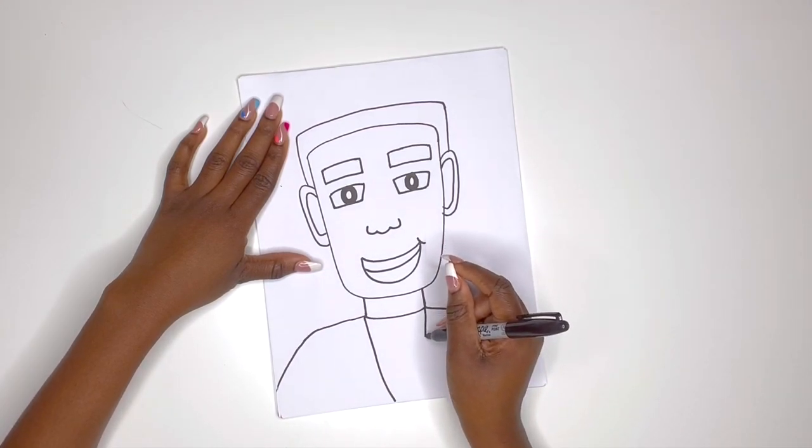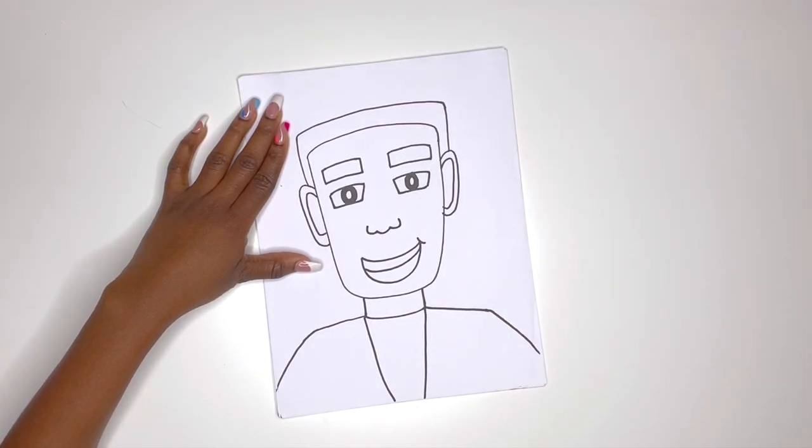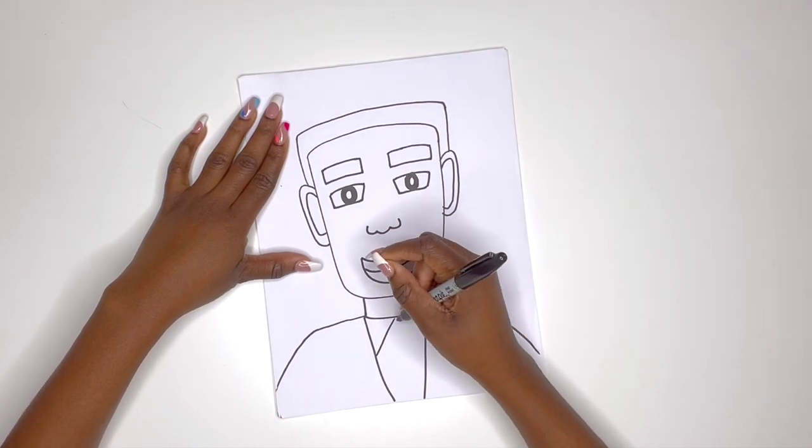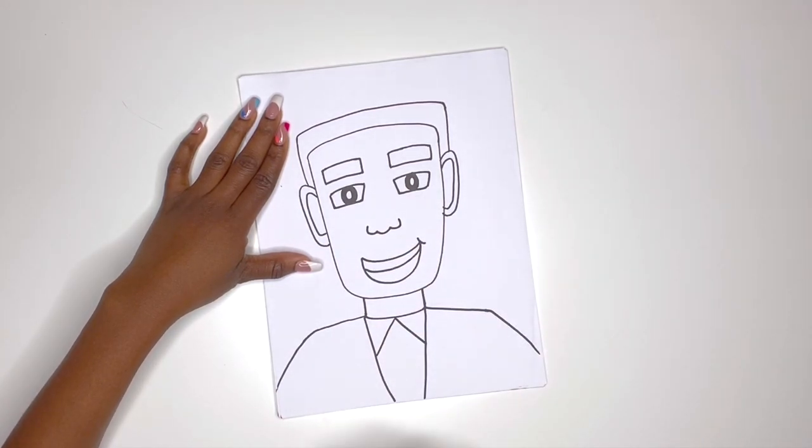gonna draw lines going down for the opening of his blazer. Now let's make his collar. You see, it's already